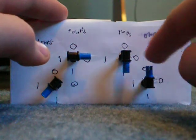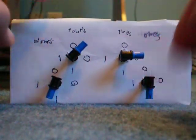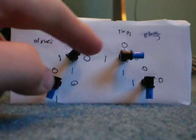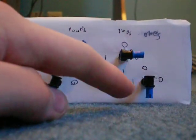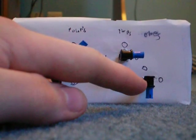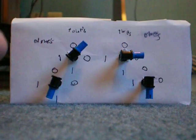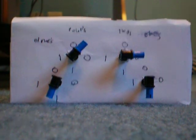And we end up getting one-zero-zero-one, which is eight plus one, which is nine. And twelve minus three is nine. And that's it.